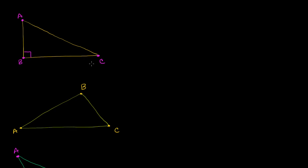Maybe we can construct a rectangle out of triangle ABC. And if we can construct a rectangle out of it, then maybe we can somehow find the area of part of that rectangle. The best way to construct a rectangle is to really duplicate ABC, then flip it over and put it right on top of this. And just to verify that that will definitely be a rectangle.